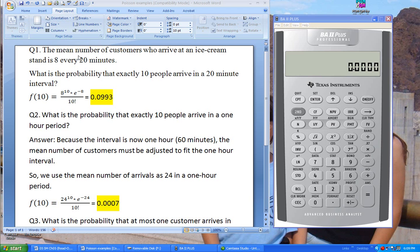It says the mean number of customers who arrive at an ice cream stand is 8 every 20 minutes. What is the probability that exactly 10 people arrive in a 20-minute interval? Using the equation in your book, the mu or the average number of arrivals is 8 and we're looking for x being exactly 10. We apply the equation as your book has it and this is the final answer.